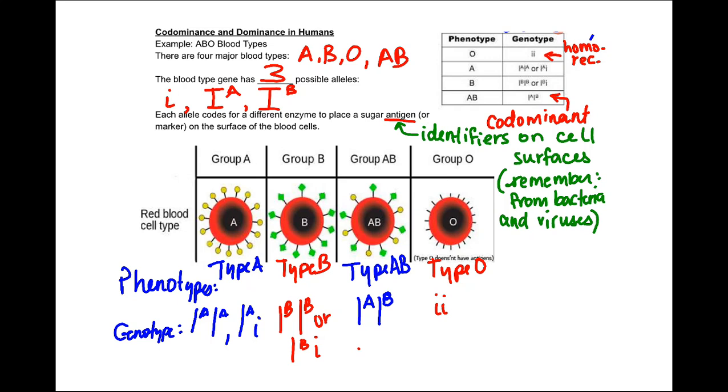A, B, and I, or lowercase i, uppercase I to the exponent of capital A, uppercase I to the exponent of capital B. Each allele codes for a different enzyme that places a sugar antigen, which helps identify cell surfaces, and remember that from bacteria and viruses, or a marker specifically, on the surface of that blood type, or that blood cell. And that allows for us to have four major blood types.